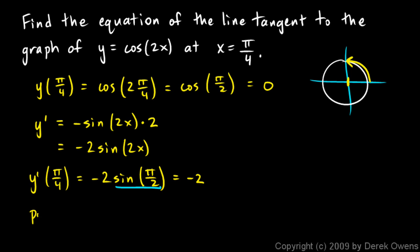So I have a point. My point is an x value of π over 4. That's the x value I plugged in. And a y value of 0. So π over 4 comma 0. And a slope of negative 2 that I just found right there.